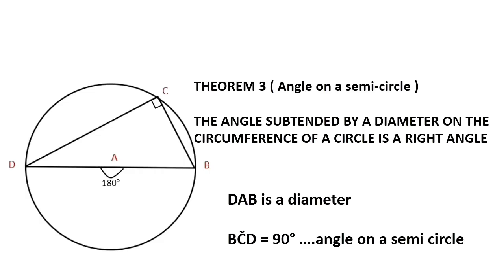In today's lesson we're going to be looking at exercises relating to Theorem 3, which states that the angle subtended by a diameter on the circumference of a circle is a right angle. For example, if we are given that DAB is a diameter, then it follows that angle BCD is equal to 90 degrees, and we state our reason as 'angle on a semicircle'.